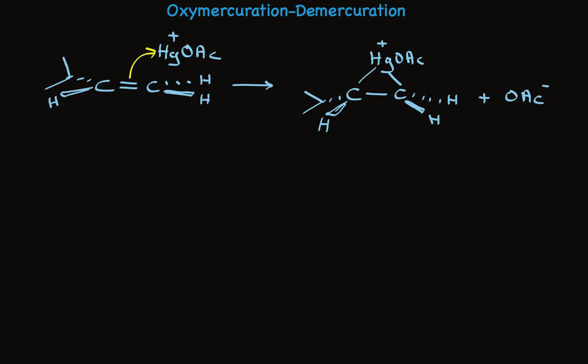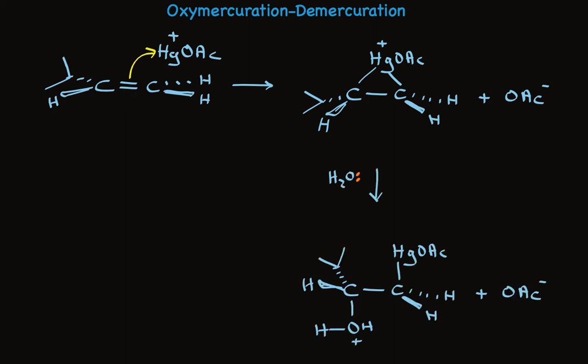In the second step, this intermediate ion adds a nucleophile, which must come from the back side because the mercury is on the other side. It's simply a steric factor — mercury is blocking approach from one side, so the nucleophile adds from the bottom. This bond breaks, and the positive charge on mercury is satisfied.